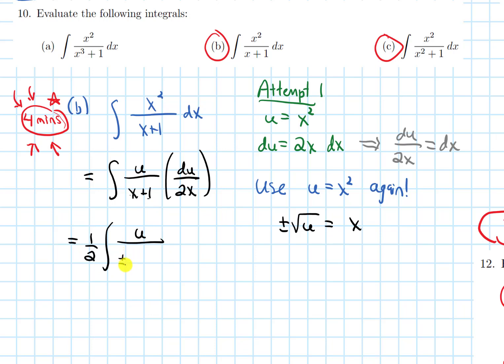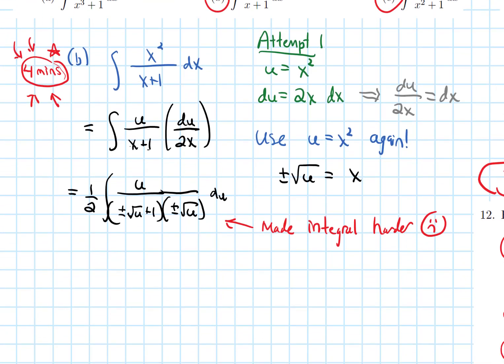And there's a couple issues with this. Like we have the plus or minus, and we're not sure which one do we use. But I would say the bigger issue is that we made the integral harder than what we started with. With the integral harder, I put a sad face. So that's not what we want u-sub to do. We want it to make the integral easier.